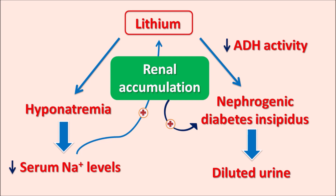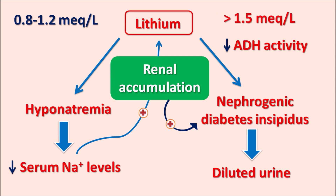This is especially important because lithium has a narrow therapeutic window. The normal therapeutic range of lithium is 0.8 to 1.2 milliequivalents per liter. When lithium levels exceed 1.5 milliequivalents per liter, it can produce lithium toxicity resulting in polyuria, polydipsia, polyphagia, renal tubular damage, and severe nephrogenic diabetes insipidus.